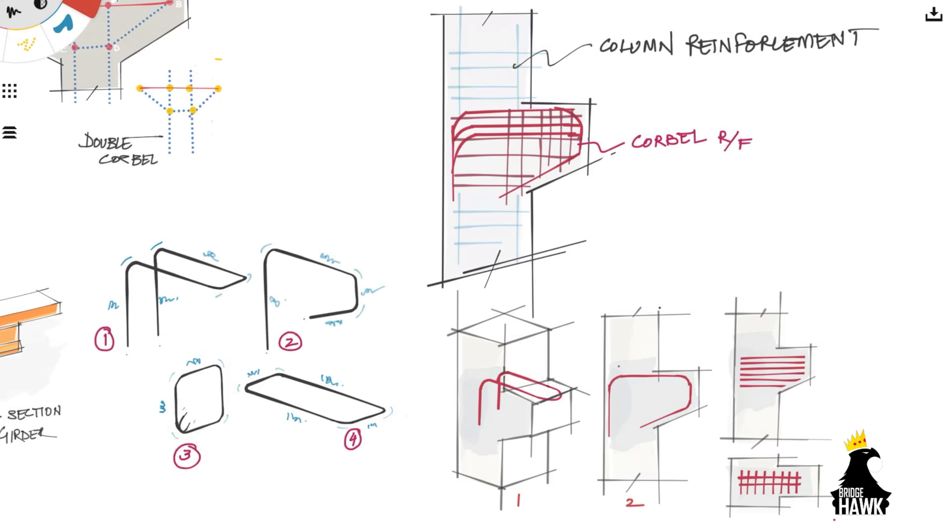The reinforcement of single corbels is provided in the following way. Reinforcing bars one, two, three, and four are placed in conjunction with the reinforcement of the column. Reinforcement bar number two is also the primary reinforcing bar.